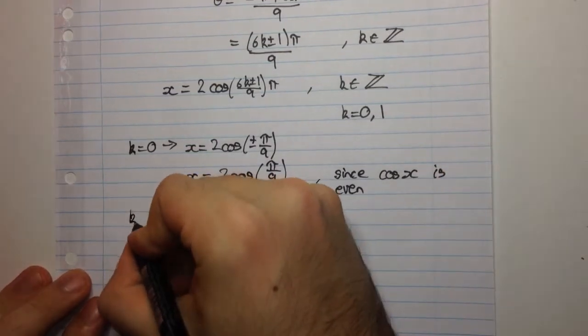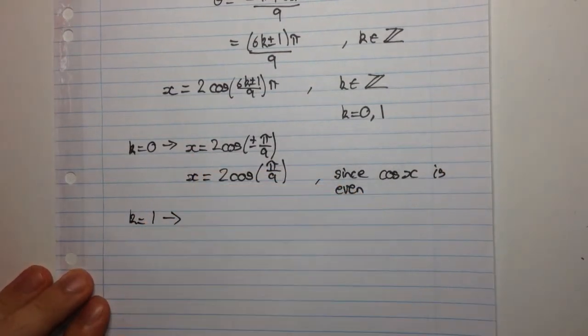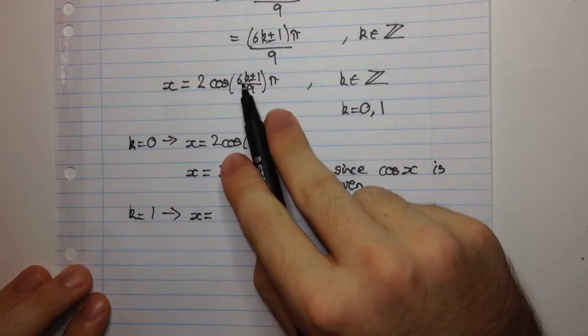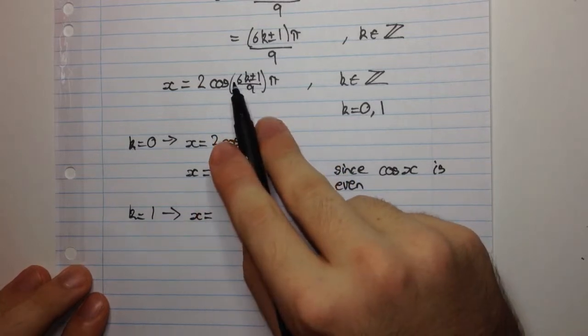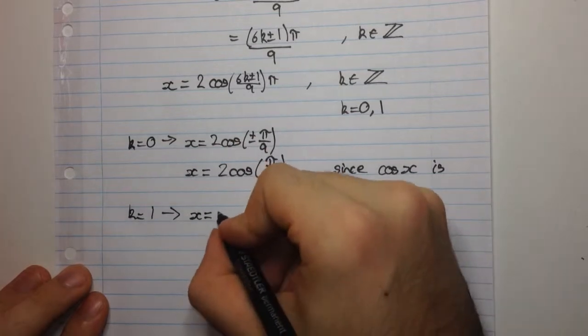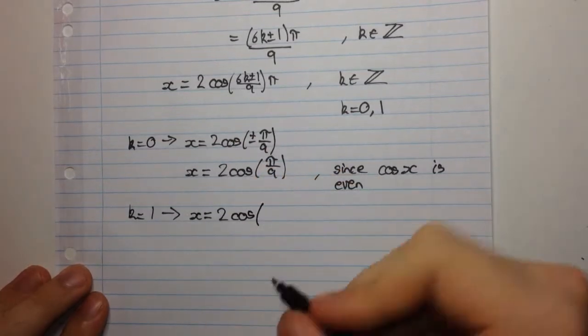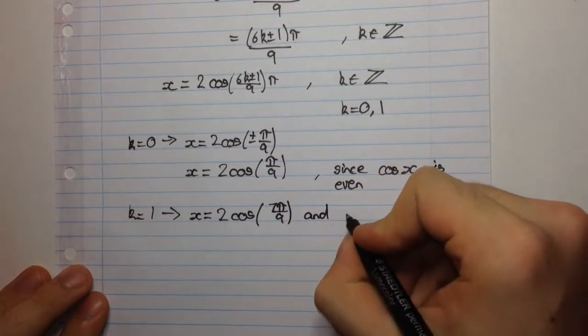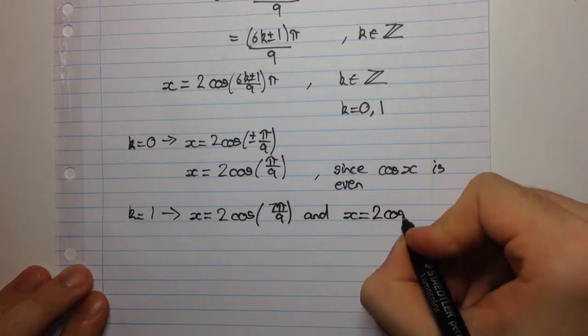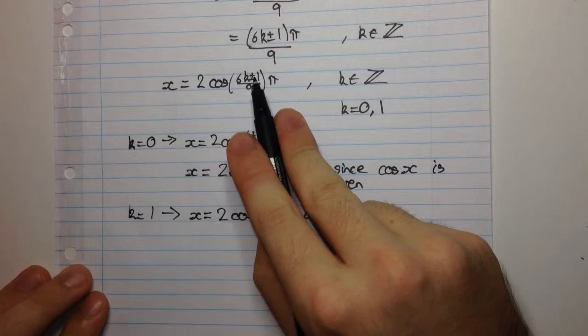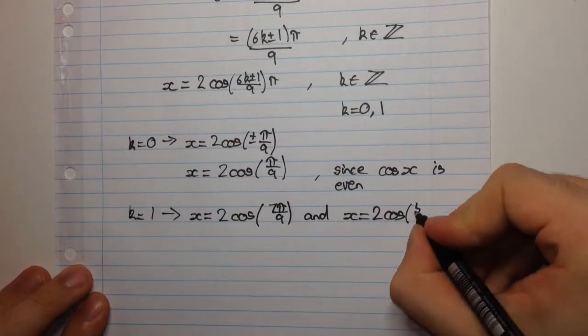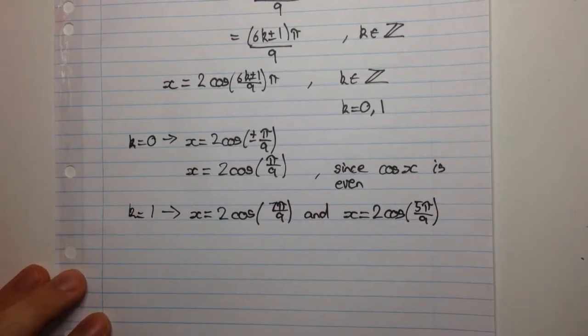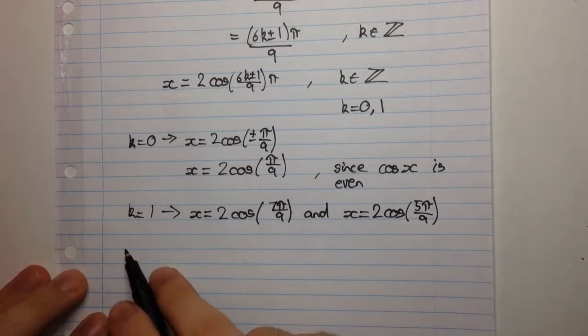Let's go ahead and put in 1. So, when k is equal to 1, we're going to get x equals, now let's just take the plus case here. So, it's going to be 6 times 1 plus 1. So, that will be 2cos, 6 plus 1 is 7, 7π over 9. And, we get x equals 2cos, let's take the minus case. So, 6 times 1 is 6, minus 1 is 5. So, 5π over 9. And these three are our solutions to the equation.